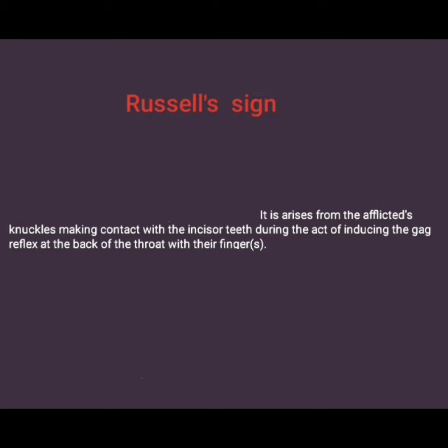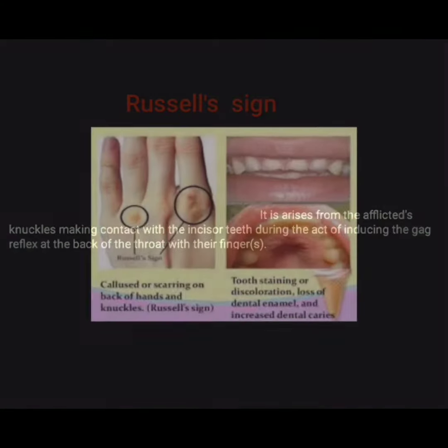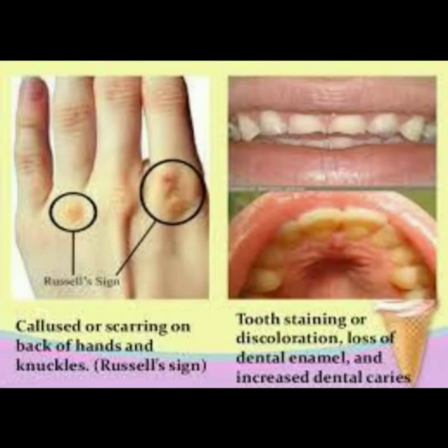It arises from the afflicted knuckles making contact with the incisor teeth during the act of inducing the gag reflex at the back of the throat with their fingers. There is callusing or scarring on the back of the hands and knuckles.